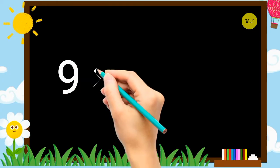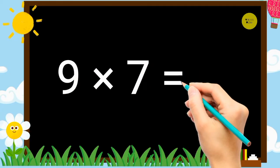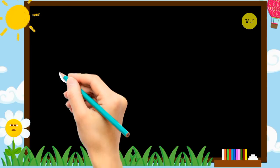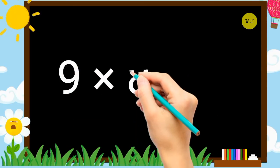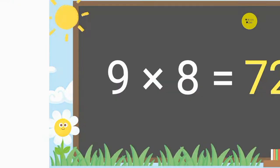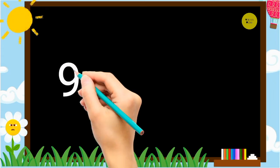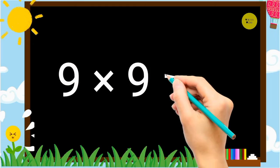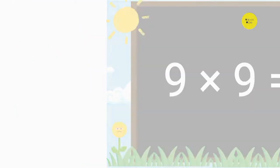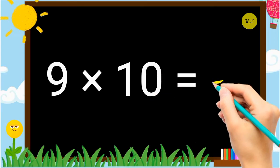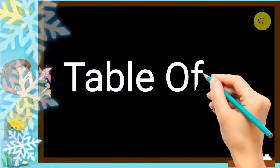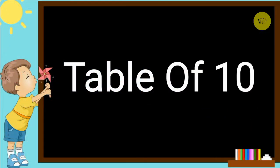9 7's are 63. 9 8's are 72. 9 9's are 81. 9 10's are 90. Table of 10.